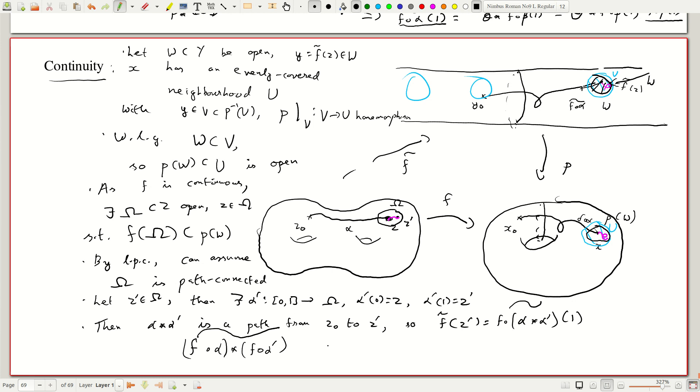Well you can see that this is f composed with alpha tilde, that is always the case, star. So what we do is we look at the lift of this, star the lift of this f composed with alpha prime starting where this ends.